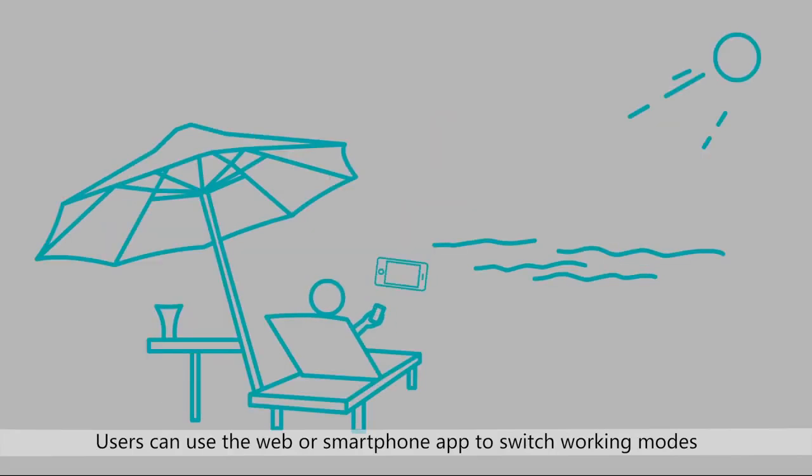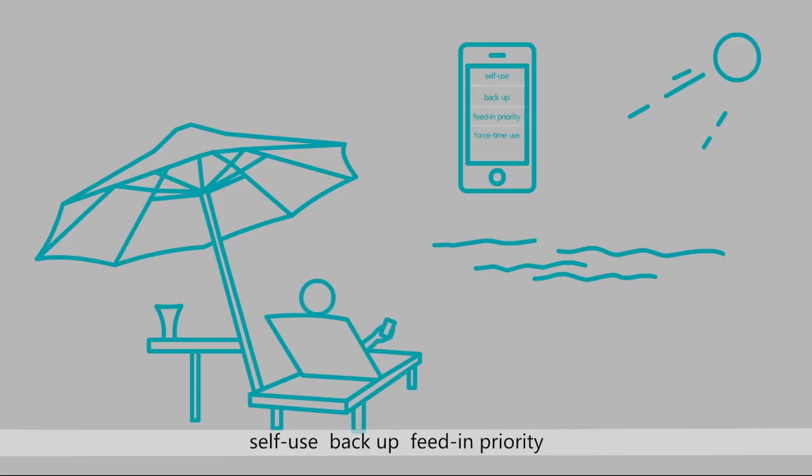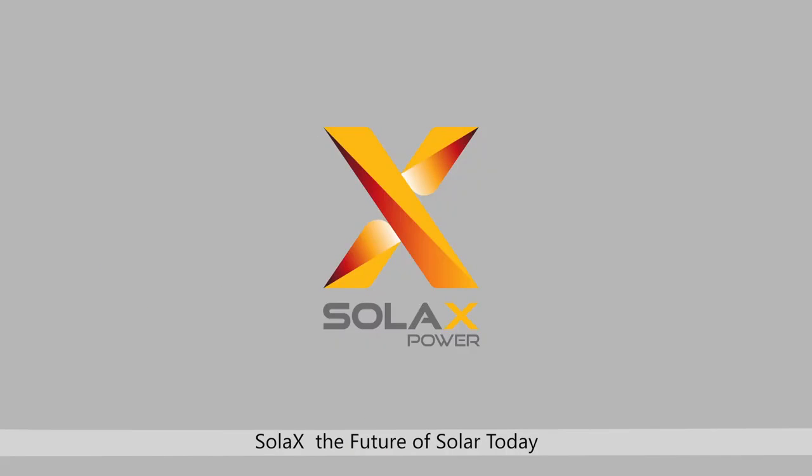Users can use the web or smartphone app to switch working modes: self-use, backup, feed-in priority, force-time use, and EPS status. SolarX, The Future of Solar Today.